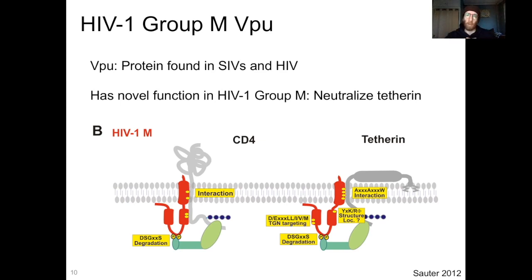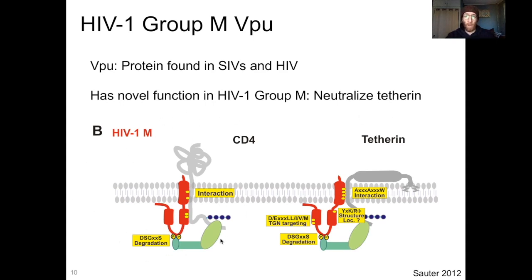This protein VPU in HIV-1 group M has a novel function. Its job in humans is to neutralize tetherin, which you can see on the right here. What VPU normally does is deal with a protein called CD4. But in HIV-1 group M, it does a second job — it deals with a protein called tetherin, which is part of the human immune system. Other apes have tetherins as well, but the SIVs have different ways of dealing with them.